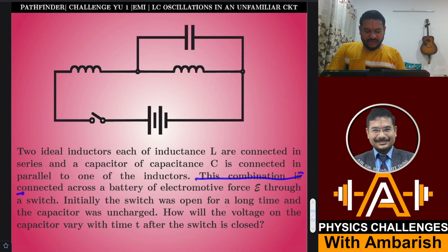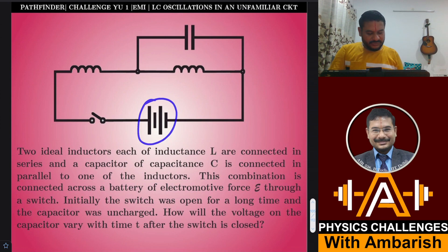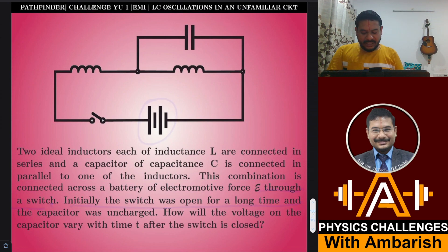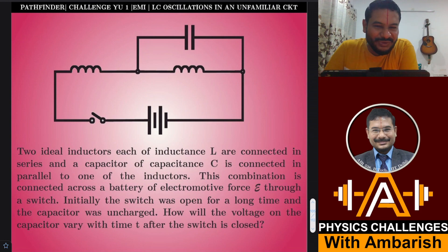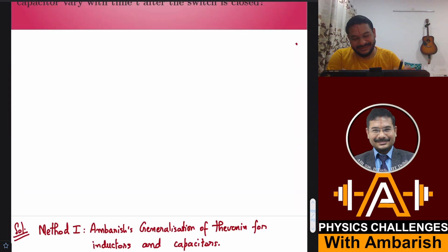This combination is connected across a battery of electromotive force E through a switch. Initially the switch was open for a long time and the capacitor was uncharged. How will the voltage across the capacitor vary with time t after the switch is closed? If you want, you can give it a try; I will present my analysis right away.